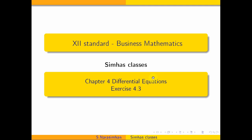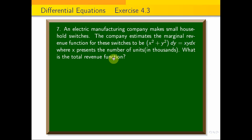Hi students, this is Simma's class, exercise 4.3, problem number 7. An electric manufacturing company makes small household switches. The company estimates the marginal revenue function for these switches to be (x² + y²)dy = xy dx, where x represents the number of units. What is the total revenue function?